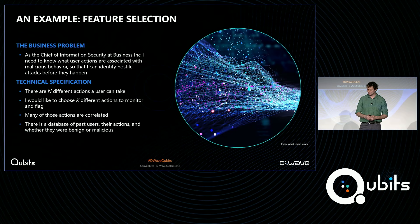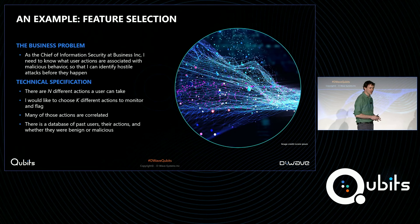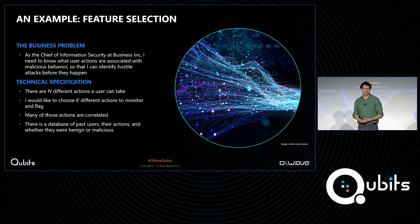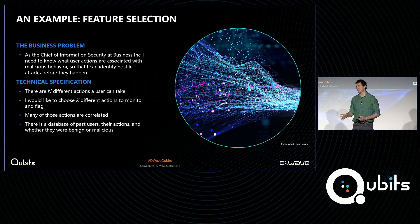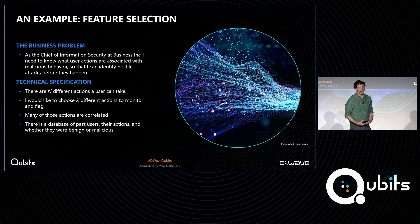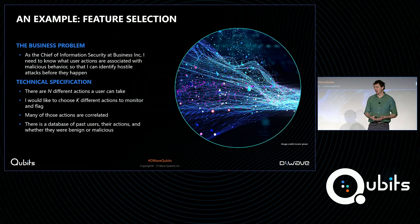Moving to the technical specification: we have N different actions a user can take on our system — entering a username or password, clicking on the community, submitting a job, filling out a form — all the different things one can do on a web platform. I want to pick K of them to monitor closely, so I can identify a potentially malicious user based on a cluster of actions. It's also true that many of these actions are correlated — users who enter a username go on to enter their password. And finally, I have a database of past users, their actions, and whether they were benign or malicious — that's the data piece.